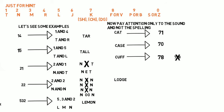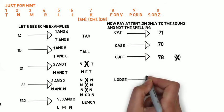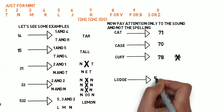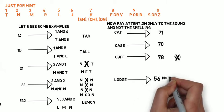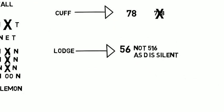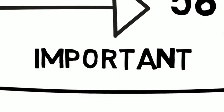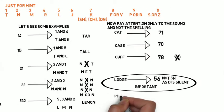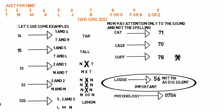'Lodge' converts to 56 and not 516, because the spelling L-O-D-G-E has a silent D when pronounced. Always remember: silent letters are ignored. 'Psychology' converts to 0-7-5-6 (S-K-L-J), not starting with 9 for P, because the P is silent when we pronounce 'psychology'.